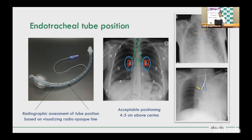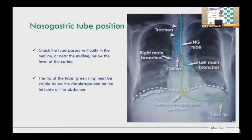If the tube is in the right bronchus due to endobronchial intubation, you may find left whole-lung collapse, causing further hypoxemia. The tube should appear vertically midline, below the level of carina — the tube tip should not be below the diaphragm or in the left abdomen.